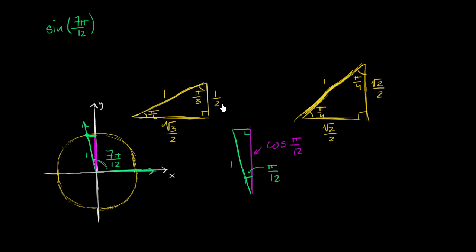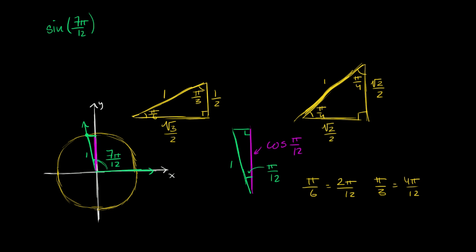So can I decompose 7π/12 into some combination of π/6, π/3, or π/4? Rewriting with denominator 12: π/6 = 2π/12, π/3 = 4π/12, and π/4 = 3π/12. Now, 4 + 3 = 7, so 4π/12 + 3π/12 = 7π/12. That means sine(7π/12) = sine(π/4 + π/3).